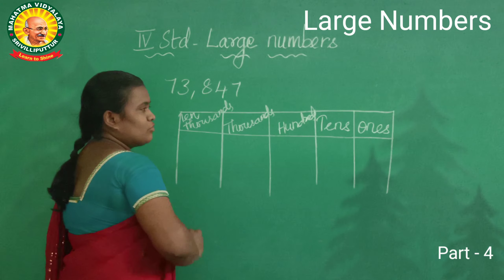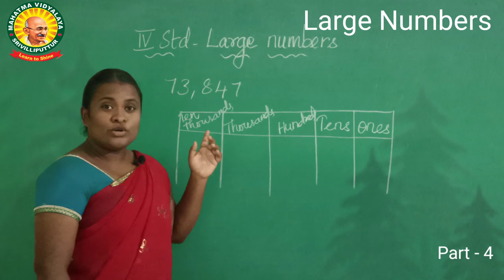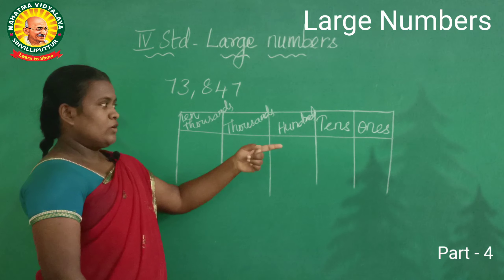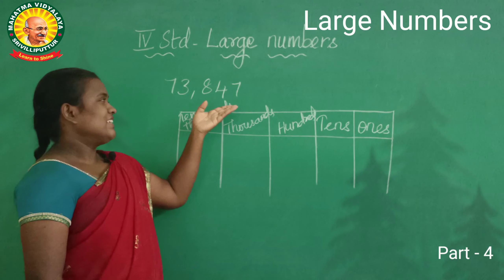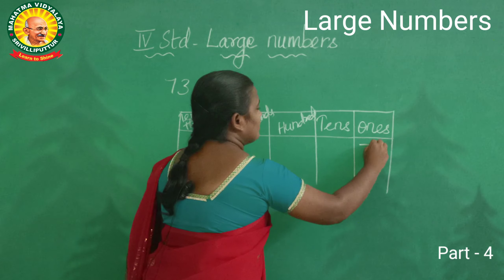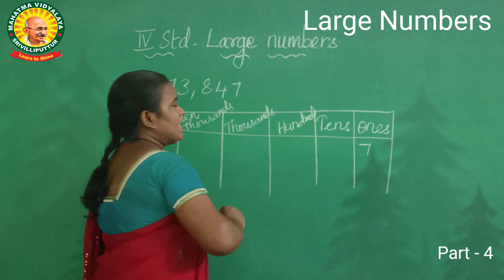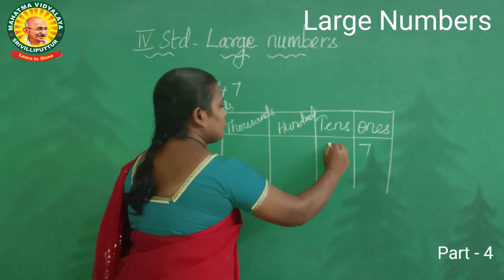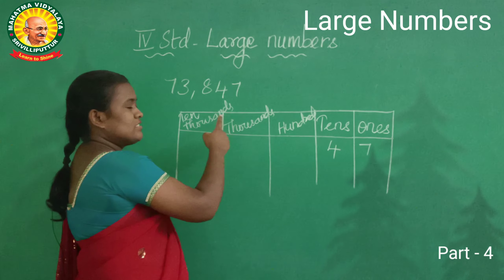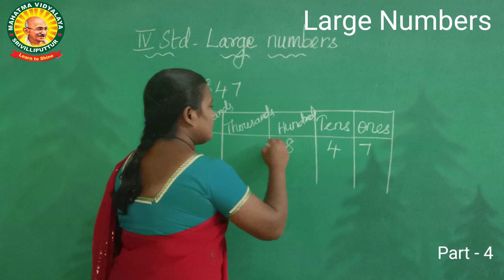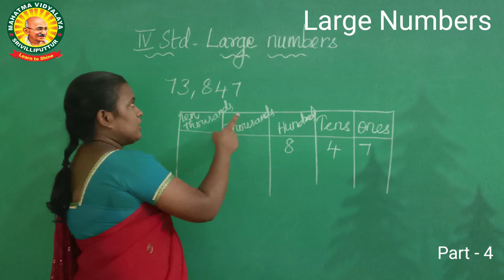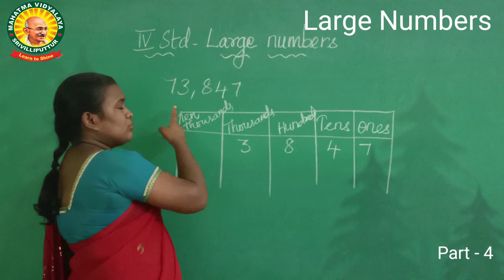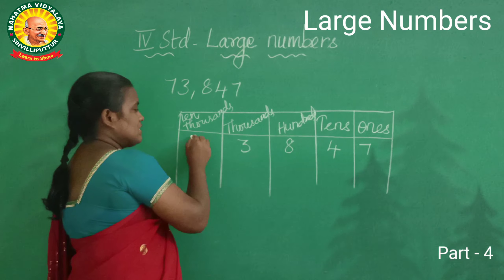Okay, now we are going to insert the numbers. Are you ready? In ones place? Seven — very good. And in tens place? Four. Hundreds? Eight — super. And in thousands? Three — very good. And in tens thousands? Seven.